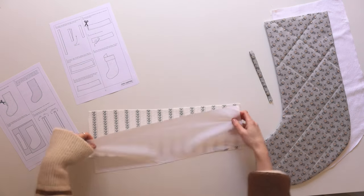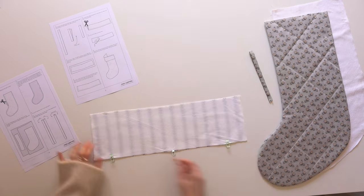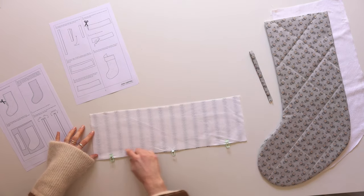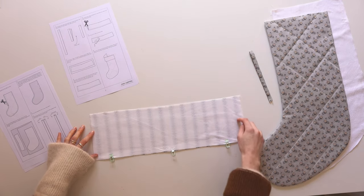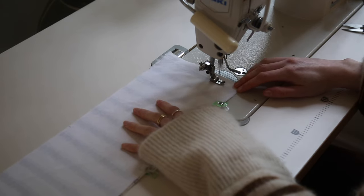Now let's work on creating the cuff. We're going to take the outer and the lining and have them good sides facing. Then we're going to stitch 1.5 centimeters around the sides and the bottom.